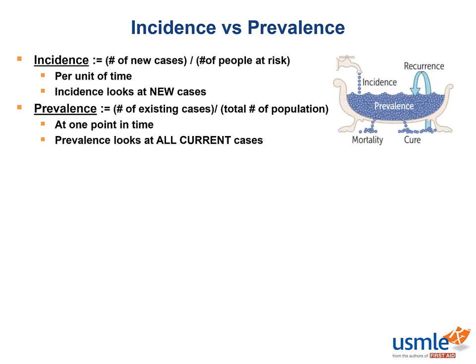To use an image from your book to better understand this concept, imagine a tub with a faucet leaking droplets of water into the tub. The incidence of disease would be represented by each droplet that falls into the tub, as these are the new cases being introduced into the population at risk. The prevalence would be represented by the water already collected in the tub, as these are the existing cases.